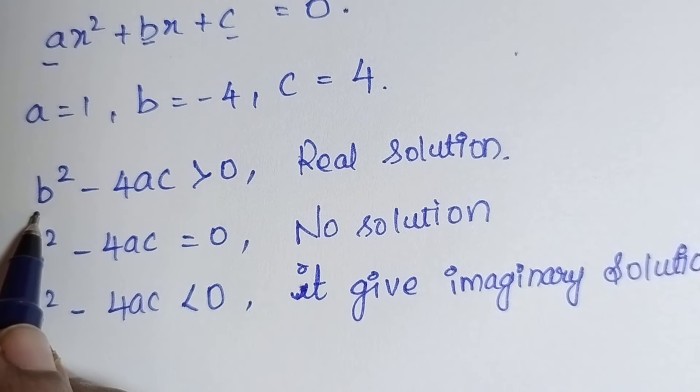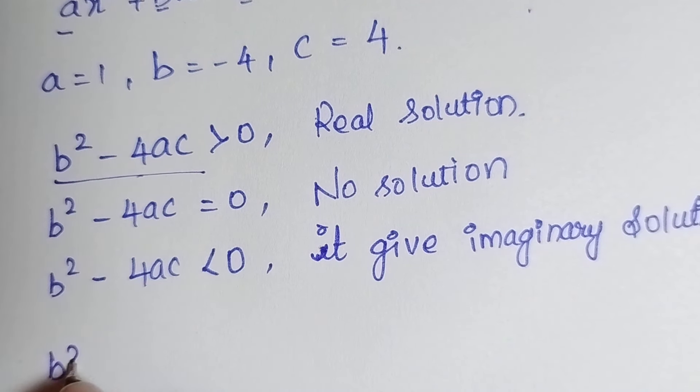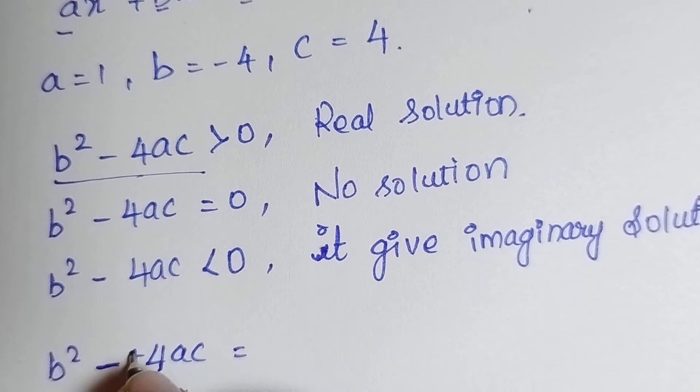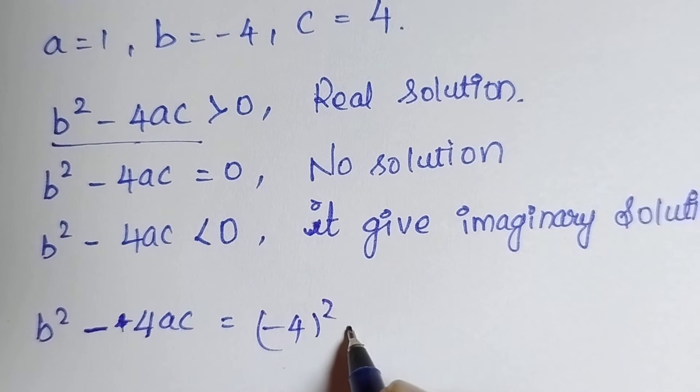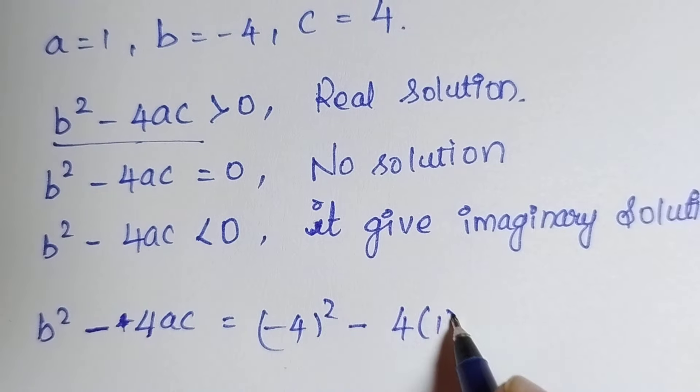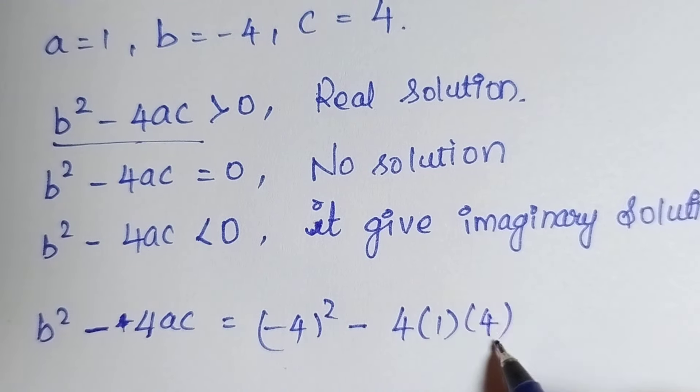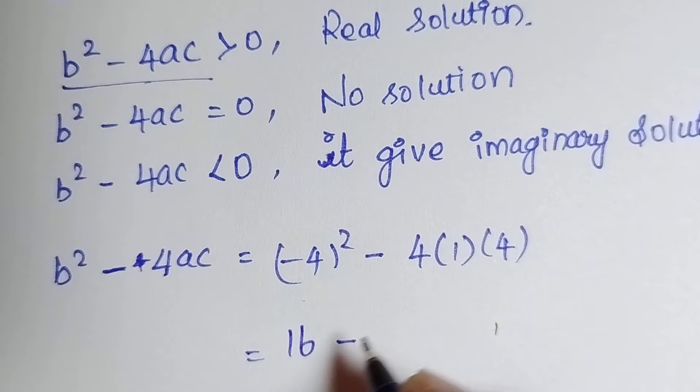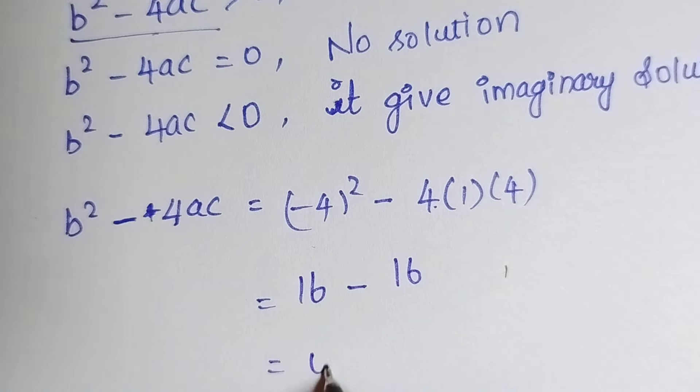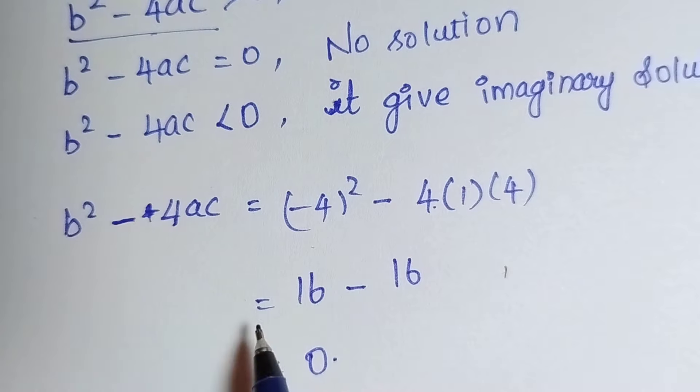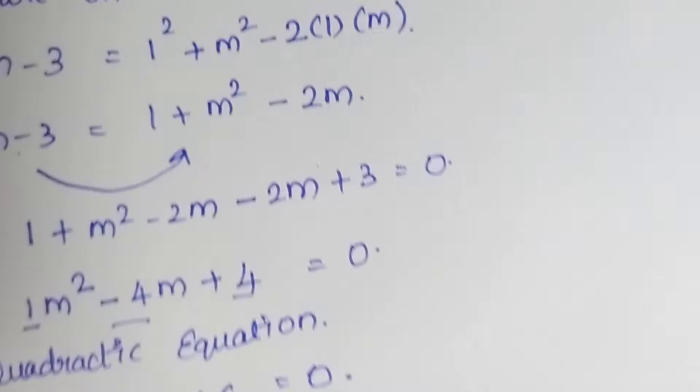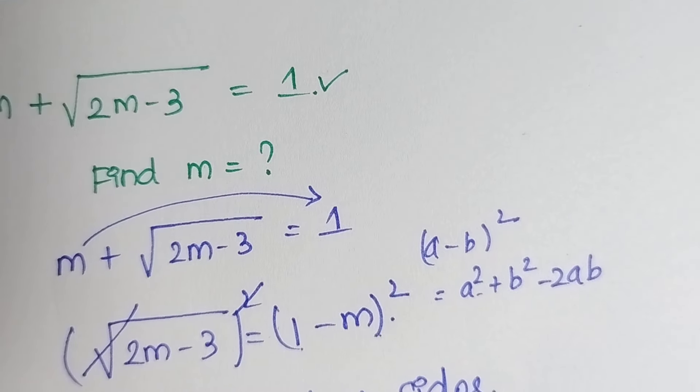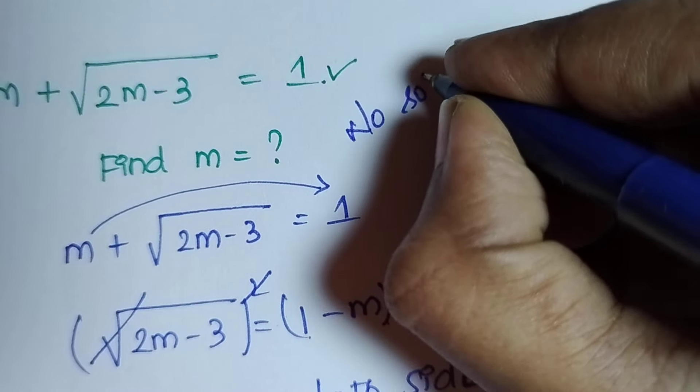Let's compare and substitute in this value. b square minus 4ac is equal to minus 4 the whole square minus 4 into a is 1 and c is 4. Minus 4 square is 16 minus 4 into 4 is 16, which is equal to 0. So b square minus 4ac is equal to 0, which means this equation provides no solution. The answer for this question is no solution.